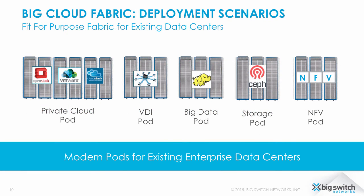There's another key element enabling hyperscalability in the Big Cloud Fabric, and that's the core and pod architecture. This architecture builds on the design principles of mega-scale operators like Google, Amazon, and Facebook, and applies them to normal-scale enterprise data centers. Pods can be a basic unit of network for consistent and predictable scaling, or they can be purpose-built for different applications. The pods are then efficiently interconnected by your existing core network, making integration of BCF into your existing network simple and straightforward.